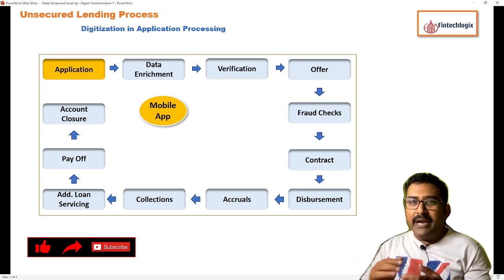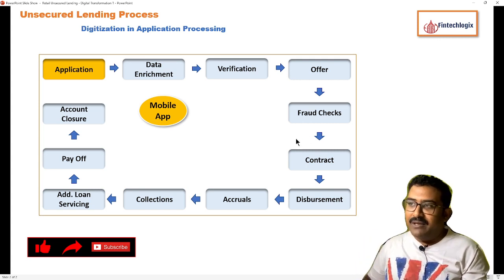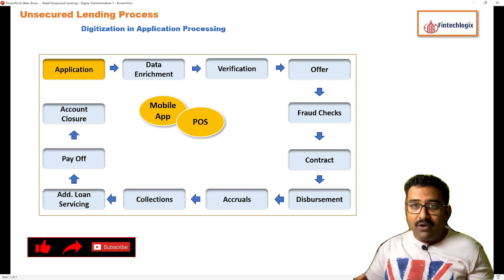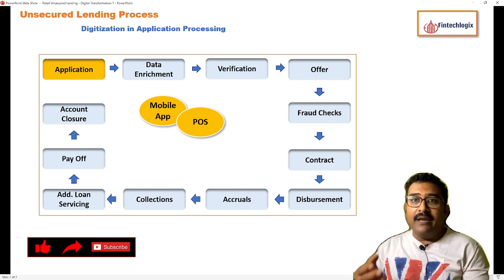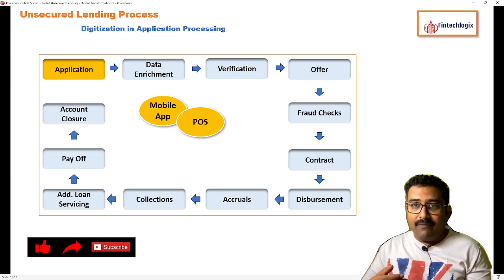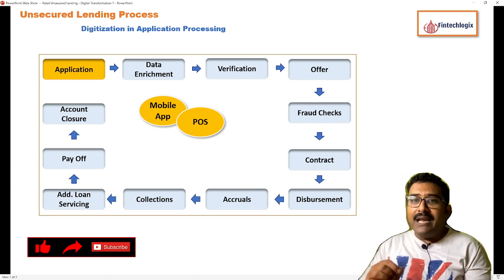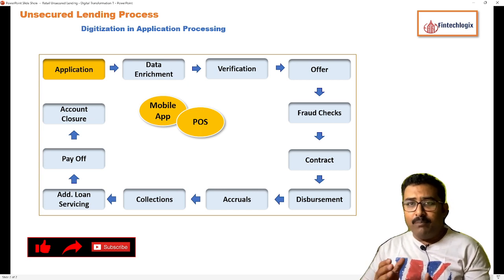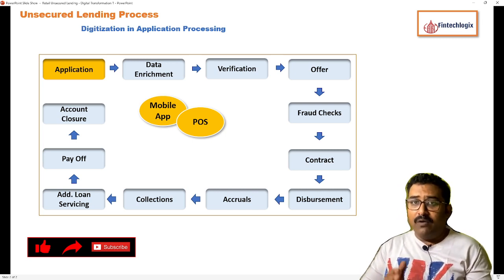This reduces the need for users to enter multiple inputs, which was required before in the application submission process. The next one is point of sales, where we take different kinds of loans like BNPL loans. You go to a merchant and ask for a loan. In the initial days, a lot of physical applications were filled up with customer signatures. Now, everything is getting digitized by providing apps and specific devices for application submission, biometrics, and capturing other details.